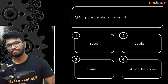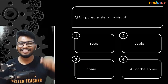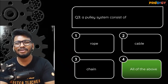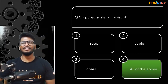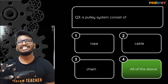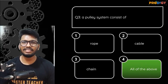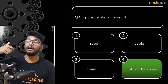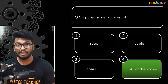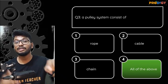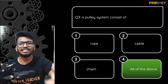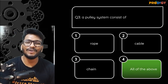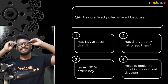Next question: 'A pulley system consists of — rope / cable / chain / all of the above?' The answer is all of the above. You can use a rope, cable, or chain. Chains are used in manual borewells and mechanic shops where engines are repaired — those pulleys use a chain similar to a bicycle chain.